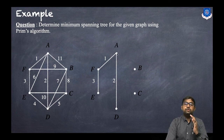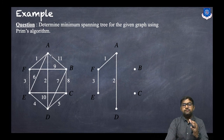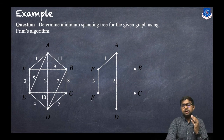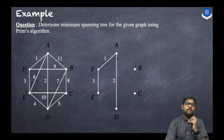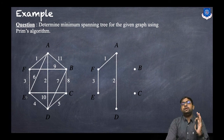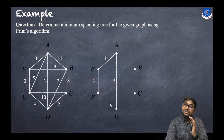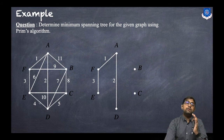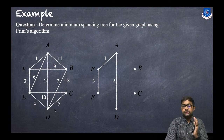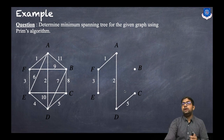Now we have four vertices. We check all adjacent edges: for A — weights 11 and 6; for F — weight 9; for E — weights 10, 6, and 4; for D — weights 5 and 7. The minimum is 4, but taking edge E–D would create a cycle, which is not allowed in a spanning tree. So the next minimum is 5, and we select edge D–C with weight 5.